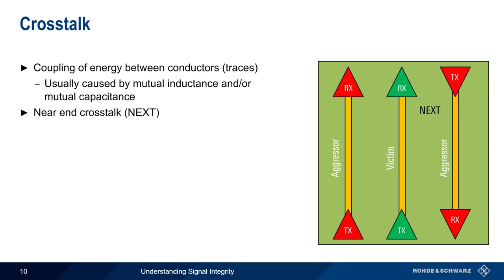In near-end crosstalk, the signal coupling occurs close to the aggressor's transmitter. In far-end crosstalk, this coupling occurs at the far end of the aggressor's trace. And just as with other aspects of signal integrity, crosstalk becomes a greater problem as signal rise time decreases.